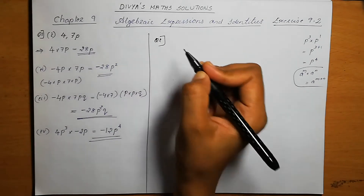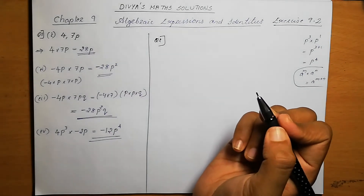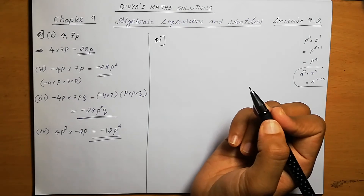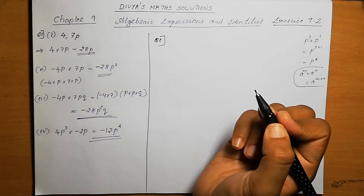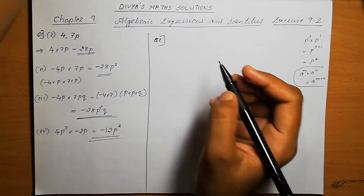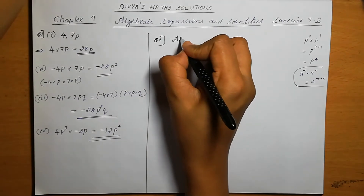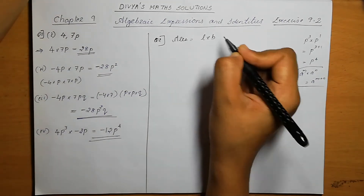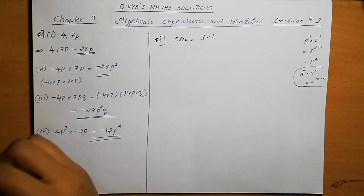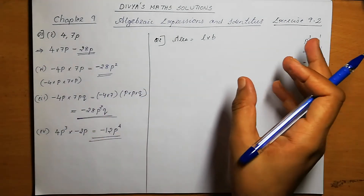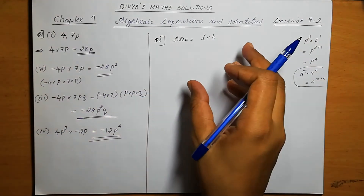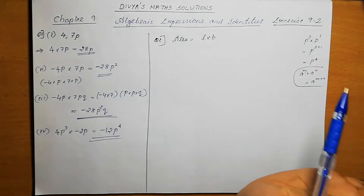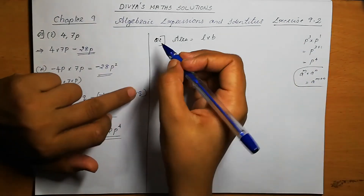Question number 2: Find the area of the rectangle with the following pairs of monomials as their length and breadth respectively. Here we are going to find area. The equation for area is length into breadth. This expression is given in the form of length and breadth as monomials, so we just need to multiply the given expressions.